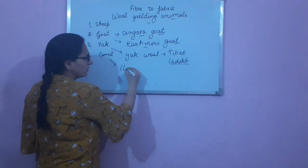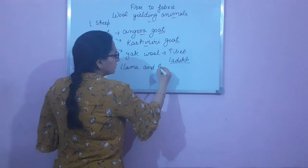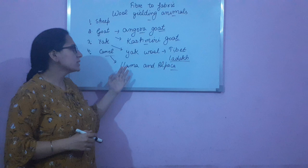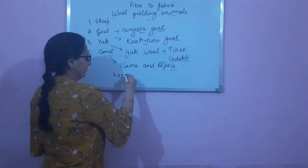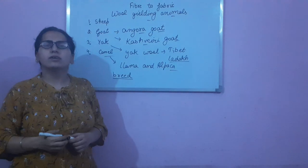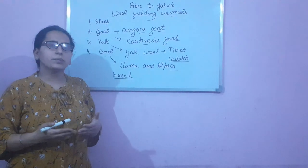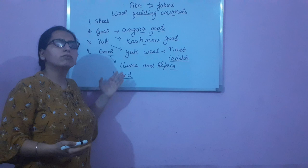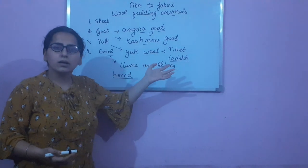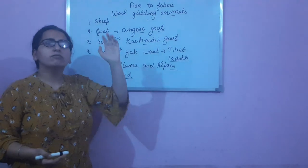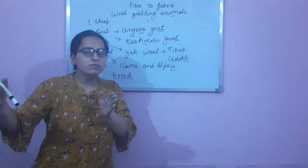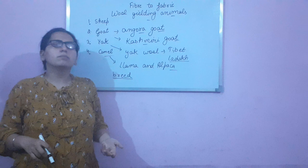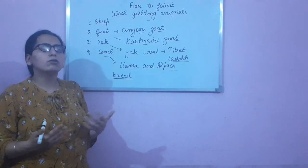Two varieties of camel that provide wool are Llama and Alpaca. To understand the term variety or breed, take the common example of dogs — there is pug, bulldog, and so on; these are different breeds. Similarly, there are different breeds of camel like alpaca and llama. There are also different breeds of sheep, and different varieties of sheep give us different types of wool, which are available at different prices in the market.